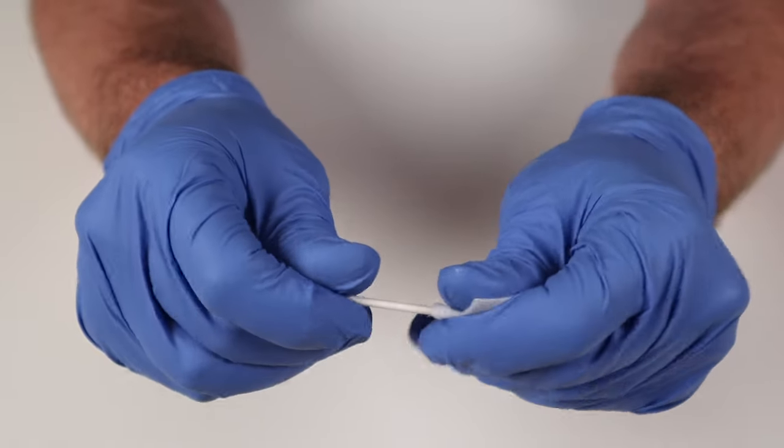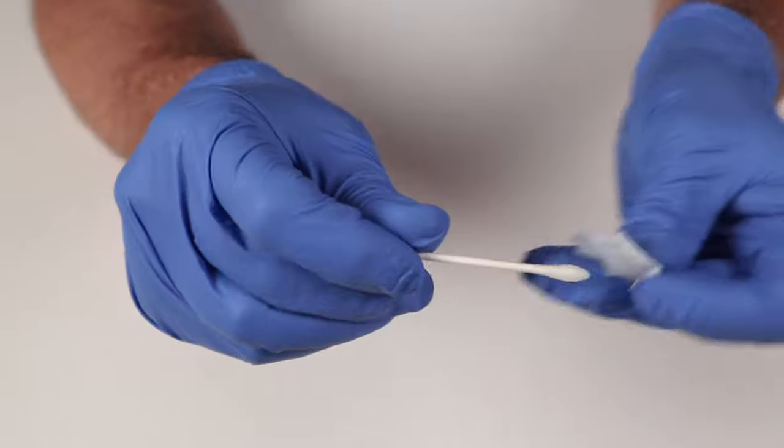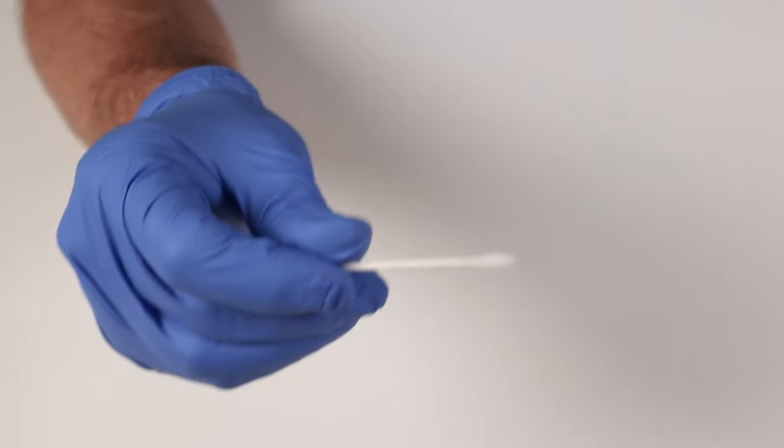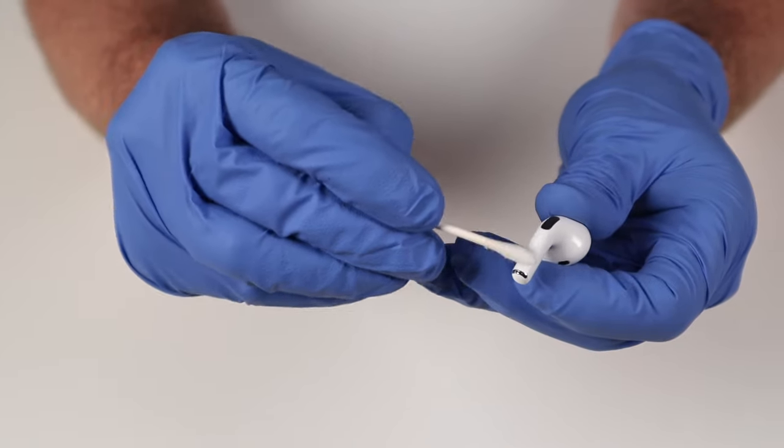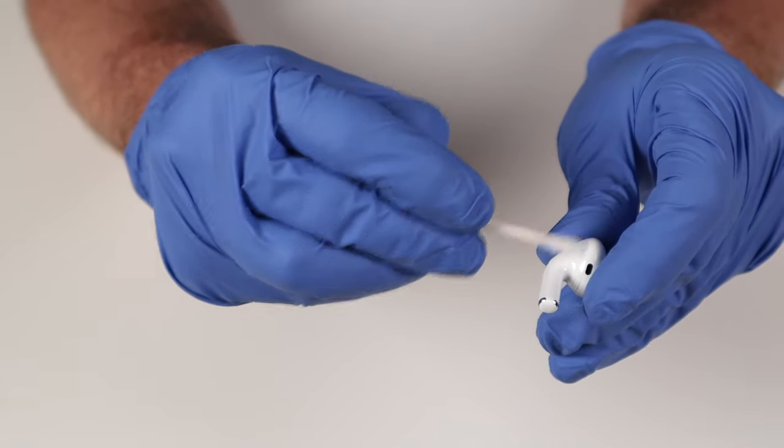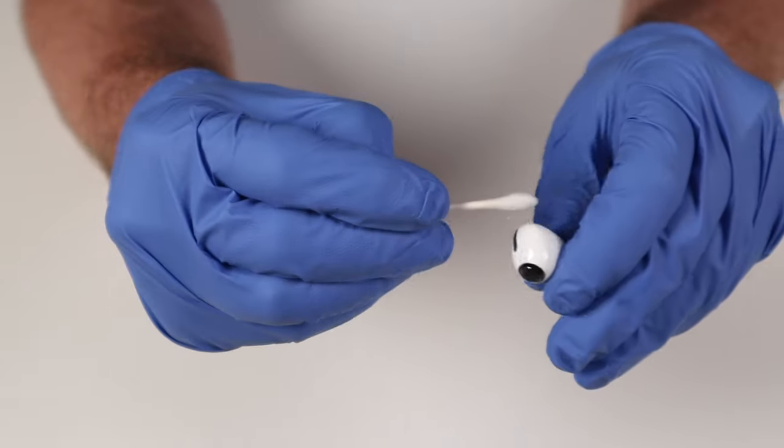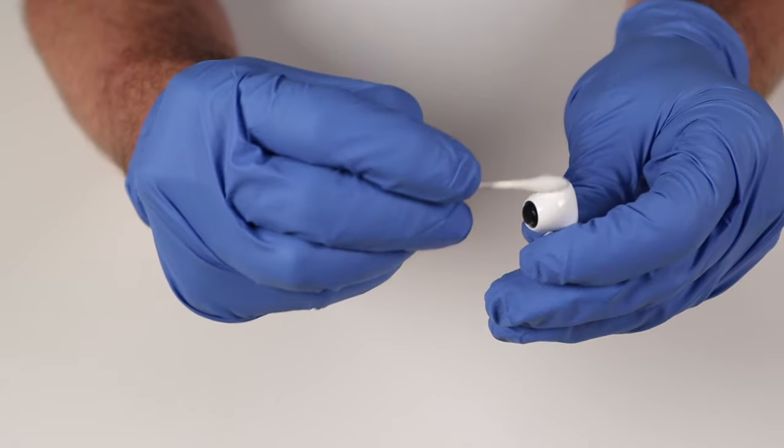Now you can use your alcohol wipes and cotton swab to clean the AirPods Pro body. I find it's easier to use the alcohol wipe to wet the cotton swab for cleaning. Do not use any cleaning wipes on the speaker mesh. Avoid exposure to any liquids in the wire mesh or speaker mesh areas. I'm only wiping down the white areas on the AirPods Pro.